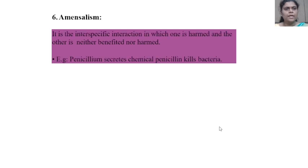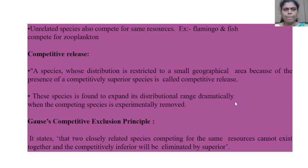Amensalism is an interspecific interaction in which one species is harmed and the other is neither benefited nor harmed. Example: Penicillium secretes the chemical penicillin, which kills bacteria. Unrelated species also compete for the same resources, as studied earlier — for example, flamingo and fish.